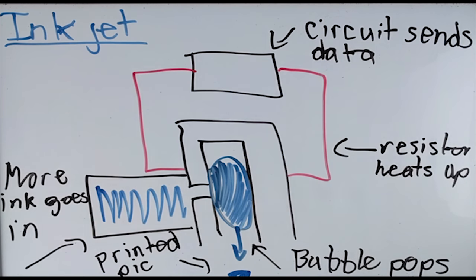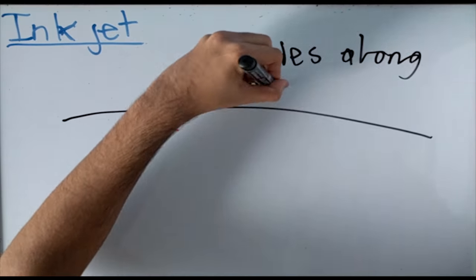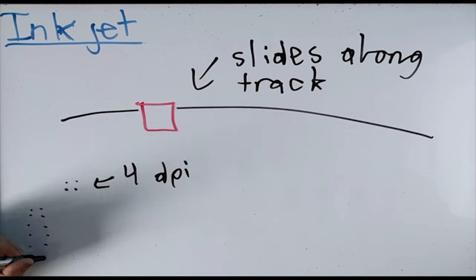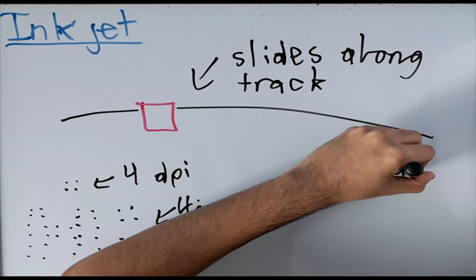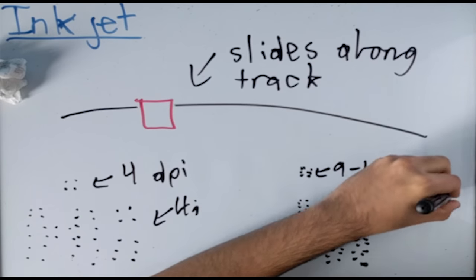Most printers contain a DPI setting, which allows you to choose how many jets fire off. This increases ink usage, but also increases picture quality. The whole matrix of jets is held together on a slider, which moves rapidly and goes line by line.